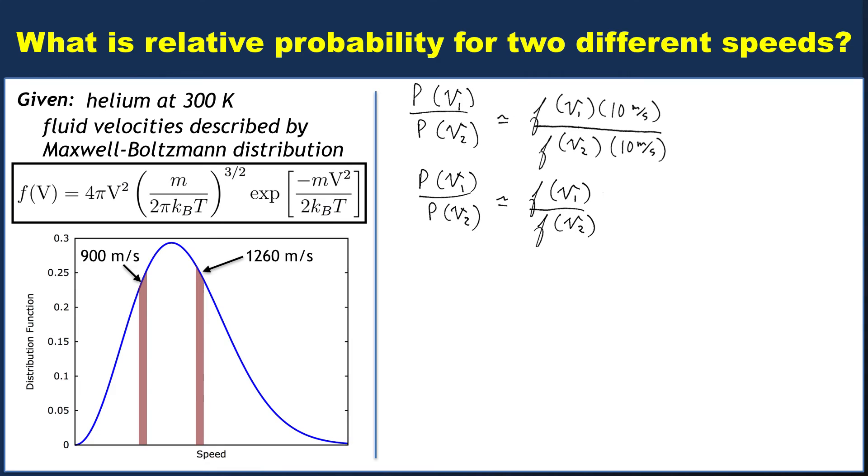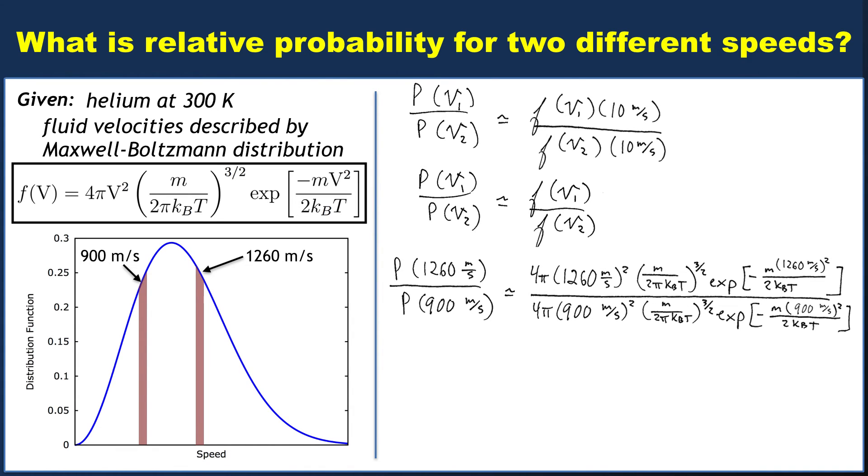So if we assign V1 to be 1260 meters per second and V2 to be 900 meters per second, we can compute the relative probabilities of finding those two speeds. We plug in those values into the distribution functions. The good news is a lot of this stuff will cancel, so let me simplify, and it becomes the ratio of 1260 to 900 squared times an exponential that's kind of involved.